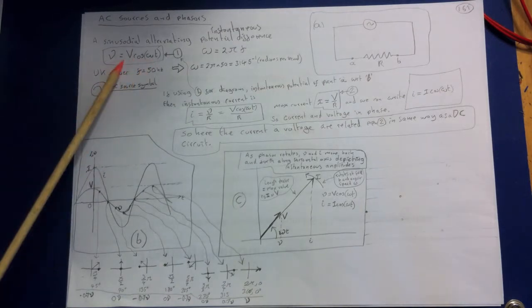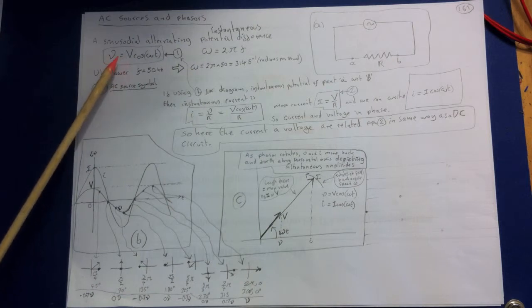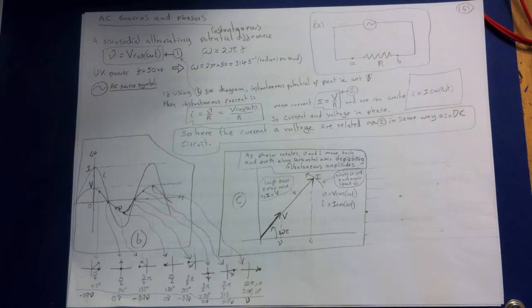Here capital V is the maximum potential difference or the voltage amplitude and little v is the instantaneous potential difference. Omega is the angular frequency equal to 2 pi times the frequency f.